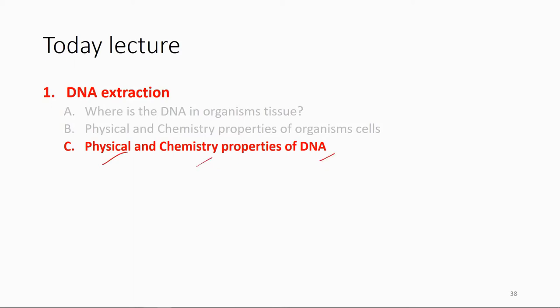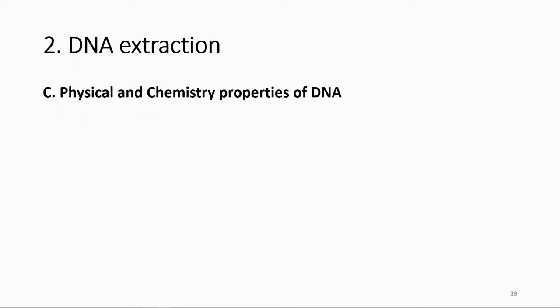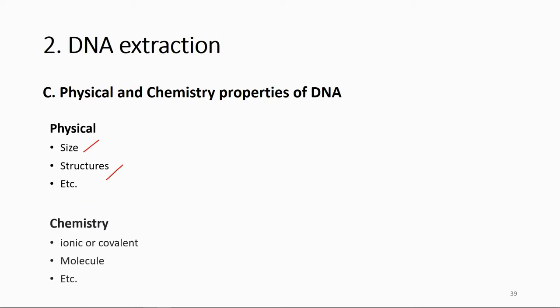The next thing to learn is the physical and chemical properties of DNA, which you also learned in cell biology and genetics. For physical properties, you need to know the size and structure of DNA, and whether the molecule is positively or negatively charged. From a chemistry point of view, you need to know whether the molecule is ionic or covalent. Please go back and review the characteristics of DNA in terms of physical and chemical properties.